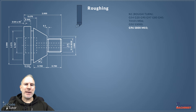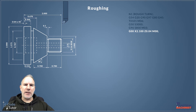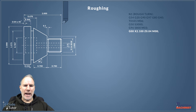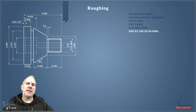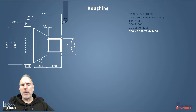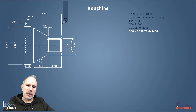M03 turns on the spindle in a clockwise direction. If our tools are reversed we might need M04 to rotate the spindle the other way. Then we do our first movement using G00, our rapid travel command — all movements ignore feed rates and go as fast as the machine parameters allow. We're coming in to X2.1 inches, which is 0.1 above the stock bar size, and rapid to 40 thousandths of an inch away from the front face. M08 at the end of this line turns on our coolant.